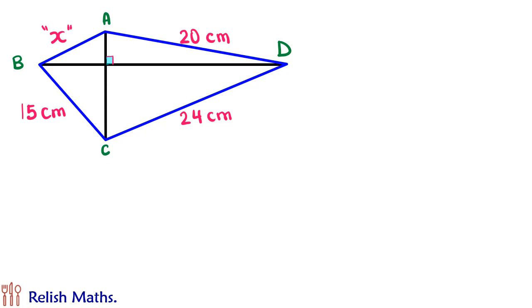Before we start solving, let us name the intersecting point of diagonals as O and AO, BO, CO and DO as a, b, c, d.